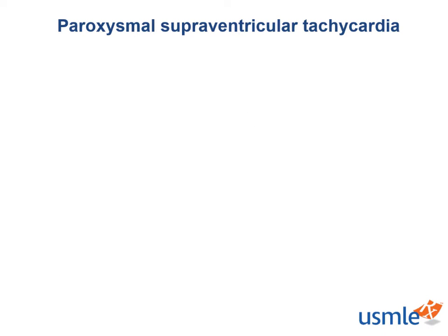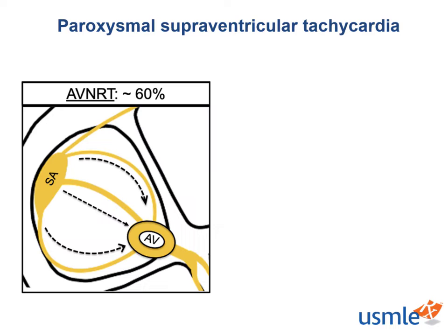The most common cause of PSVT is AV nodal reentry tachycardia. This occurs because in the normal AV node there is a fast conduction pathway and a slow conduction pathway. A normal sinus beat is conducted through both pathways, but the fast pathway beats the slow pathway to the bundle of His, so the slow pathway's signal gets terminated. However, if an ectopic beat — usually a premature atrial contraction — occurs between two normal sinus beats, the fast pathway, which has a longer refractory period, will not be excitable. The impulse is instead conducted down the slow pathway, which has a shorter refractory period, in the normal anterograde direction to the bundle of His.